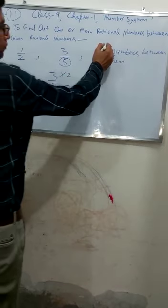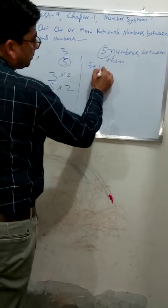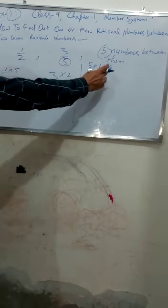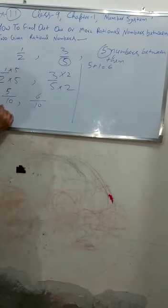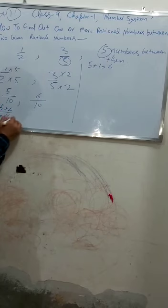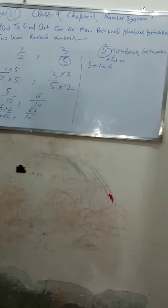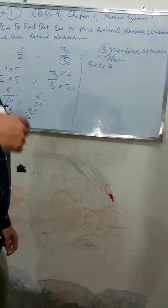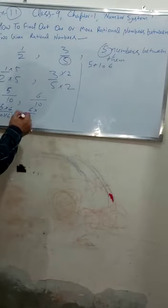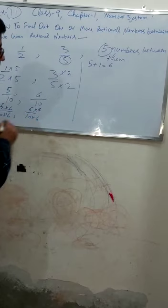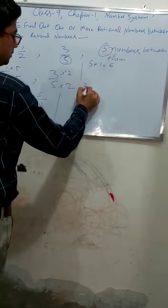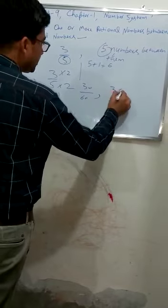We have 5 upon 10 and 6 upon 10, but we need to find 5 numbers between them. Since there are no integers between 5 and 6, we will multiply again — by 6 in both numerator and denominator of each fraction. This gives us 30 upon 60 and 36 upon 60. Now between 30 and 36 we can write the required numbers.